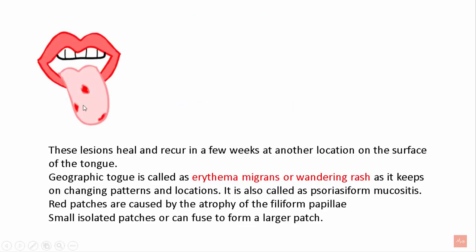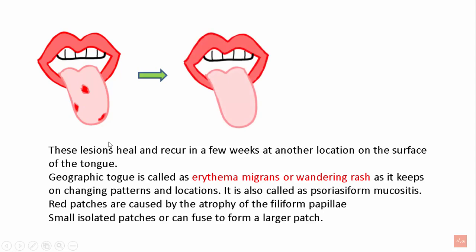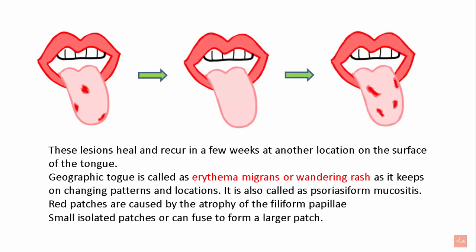These lesions heal and then recur in a few weeks at other locations. Geographic tongue is also called erythema migrans or wandering rash, as it keeps on changing patterns and locations. It is also called psoriasiform mucositis. The red patches are caused by atrophy of the filiform papillae, and small isolated patches can fuse and coalesce together to form a larger patch.